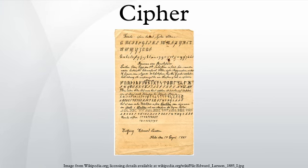In cryptography, a cipher is an algorithm for performing encryption or decryption — a series of well-defined steps that can be followed as a procedure. An alternative, less common term is encipherment.